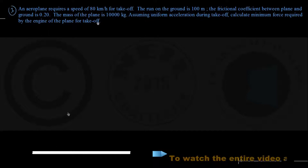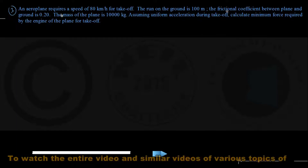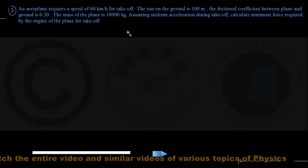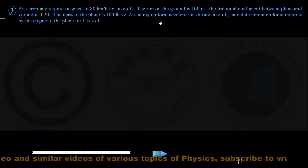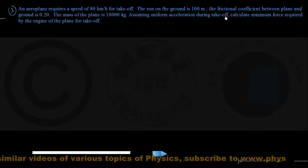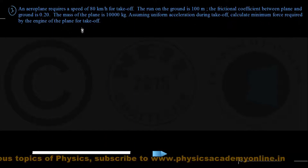Let's move on to problem number three in the lecture. An aeroplane requires a speed of 80 kilometers per hour for takeoff. The run on the ground is 100 meters, the frictional coefficient between the plane and the ground is 0.20, and the mass of the plane is 10,000 kg. Assuming uniform acceleration during takeoff, calculate the minimum force required by the engine of the plane for takeoff.